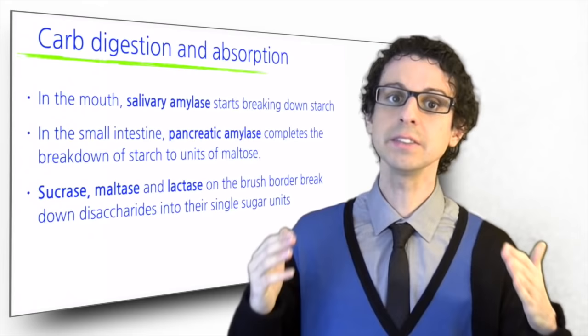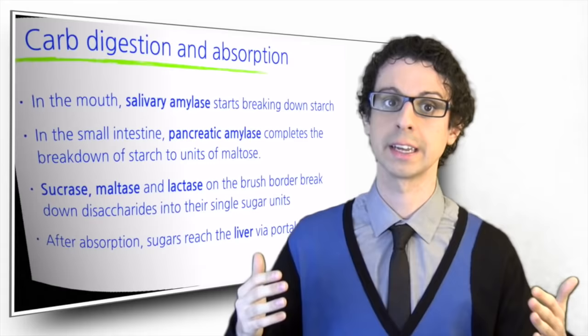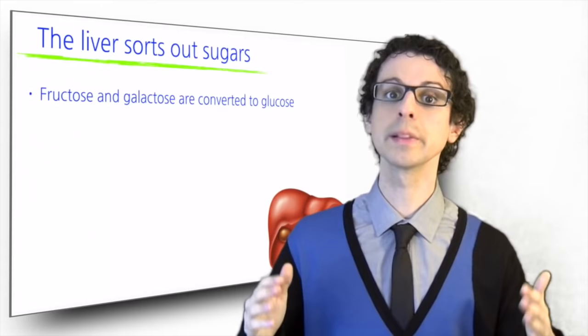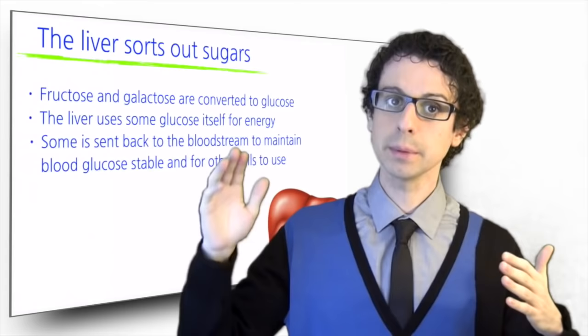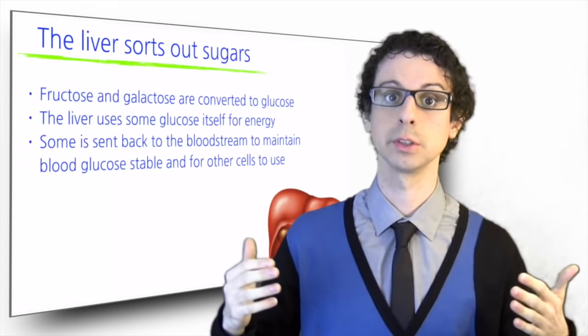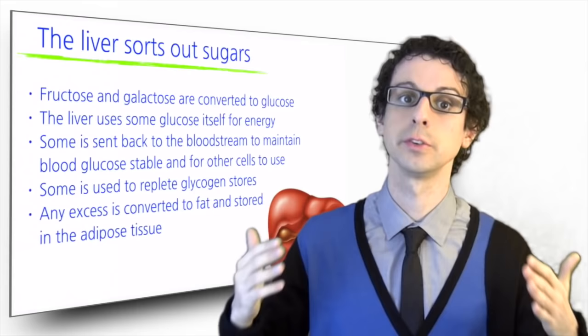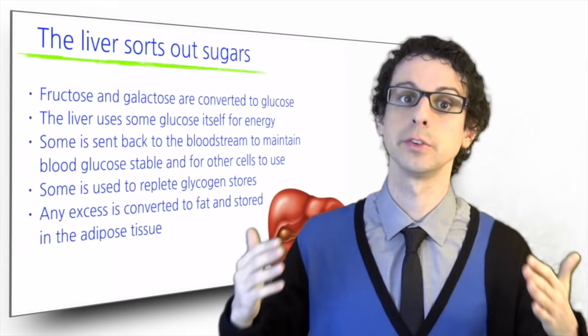The individual monosaccharides can then be absorbed and entered the bloodstream through the portal vein directed to the liver. In the liver, fructose and galactose are almost completely converted to glucose. The liver uses some glucose itself for energy, some is sent back to the bloodstream to maintain blood glucose stable and for other cells to use, some is used to replete glycogen stores and any excess is converted to fat and stored in the adipose tissue.